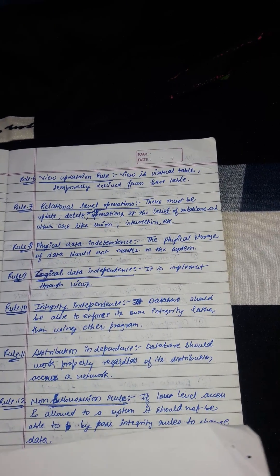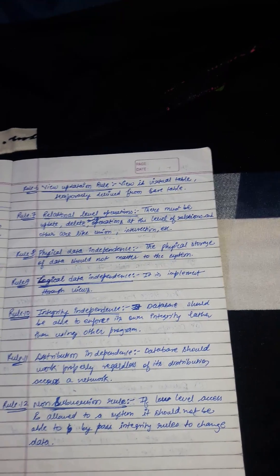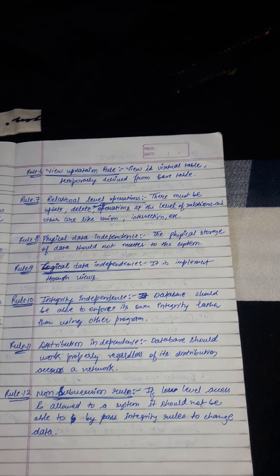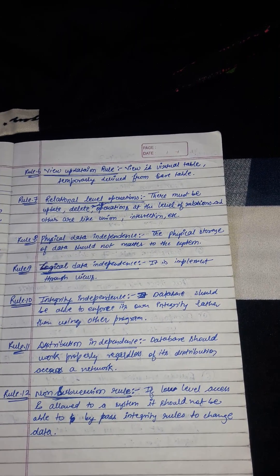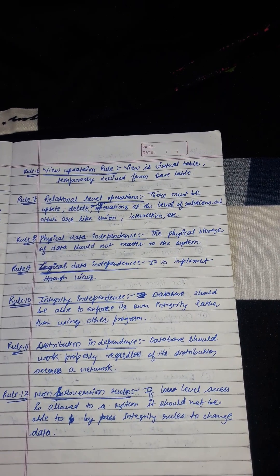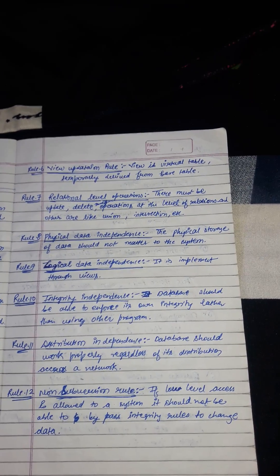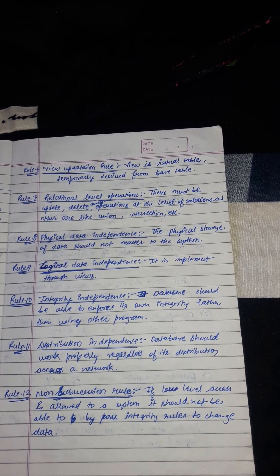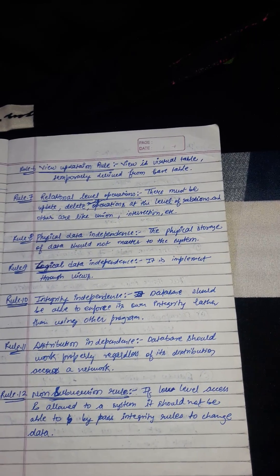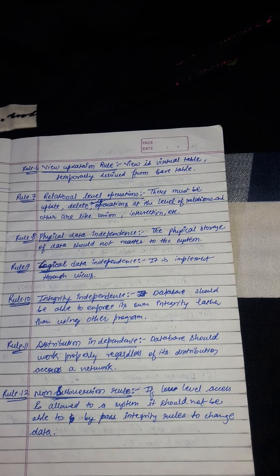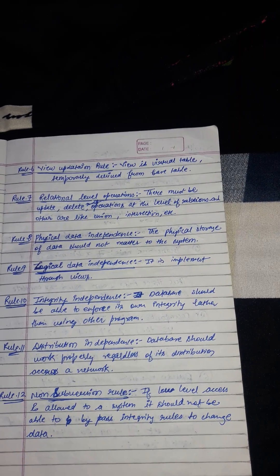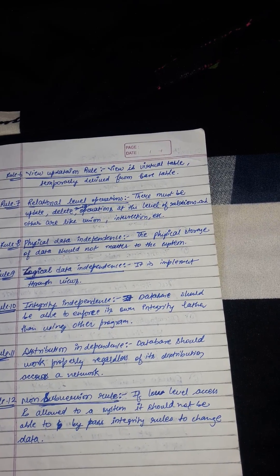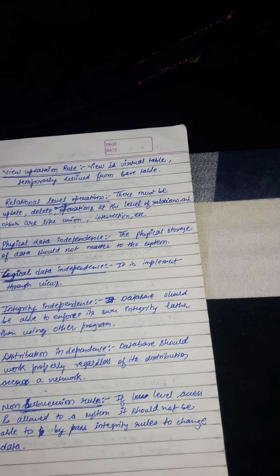Rule 12 is the non-subversion rule. If low-level access is allowed to a system, it should not be able to bypass its integrity rules to change data. There should be no way to modify the database structure other than through the SQL database language. Most databases today support administrative tools that allow some direct manipulation of data structure.